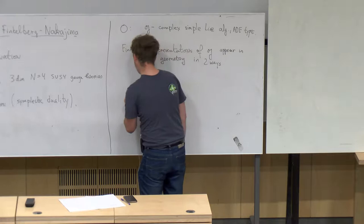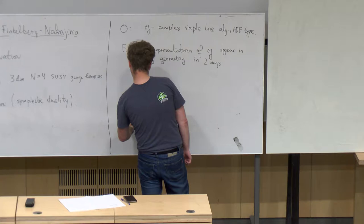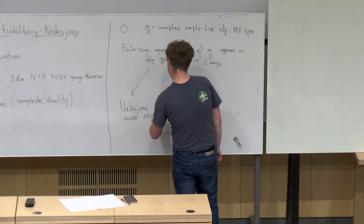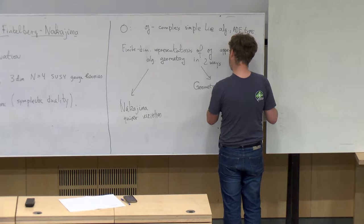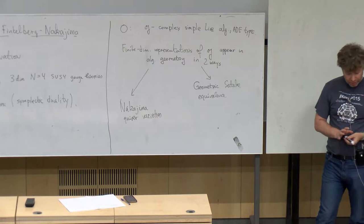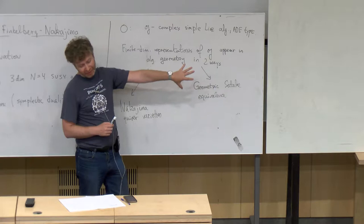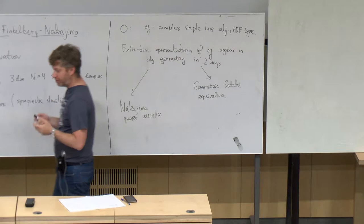One construction is through what is called Nakajima quiver varieties — I'm going to give a definition of a certain version of Nakajima quiver varieties later in the talk. Another is through what is called geometric Satake equivalence, which is a starting point for things like geometric Langlands correspondence. Part of the package of geometric Satake equivalence is that you construct finite-dimensional representations of simple Lie algebras by realizing them in certain cohomology.